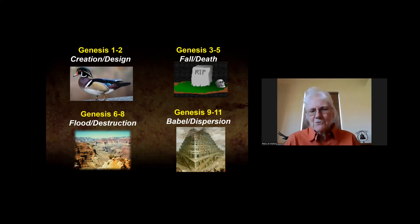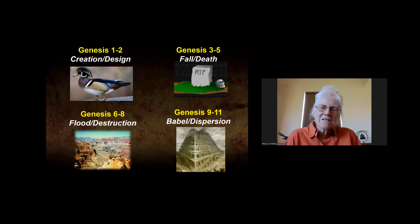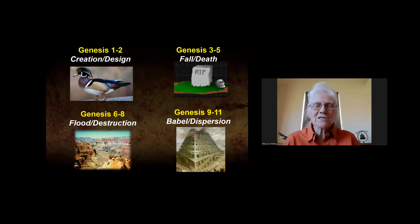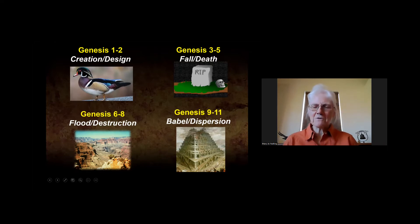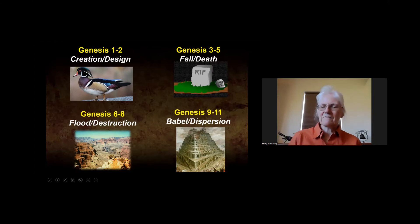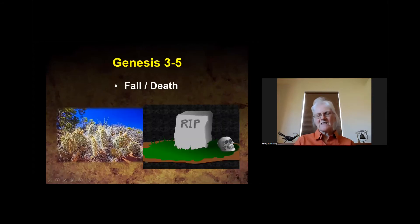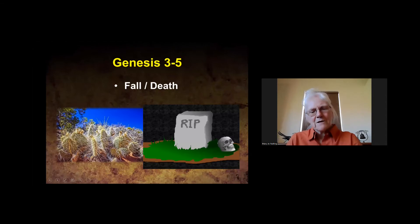As we continue in Genesis, wickedness kept increasing until God brought the judgment of the flood — to cleanse the earth and to save Noah, his family, and representatives of all the land animals. Dave will be talking about the evidence of the flood in the next day or two. Then in Genesis 9 through 11 we learn about Babel and the dispersion, which is the pattern of where we're heading with this program.